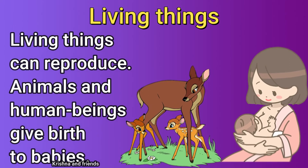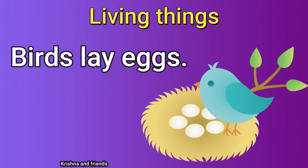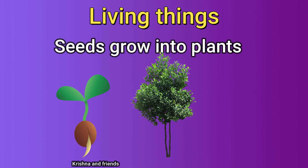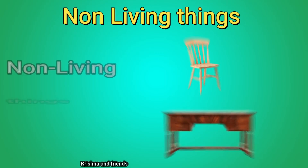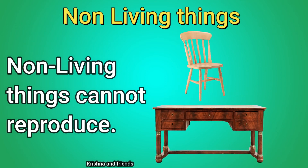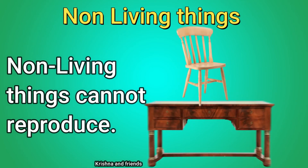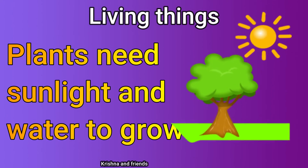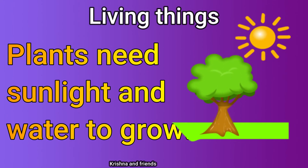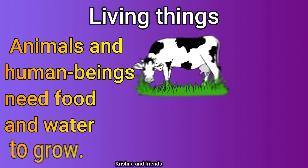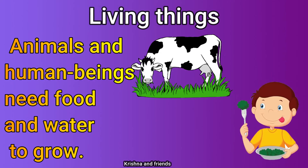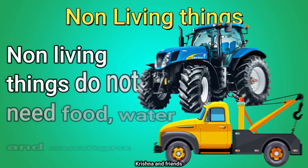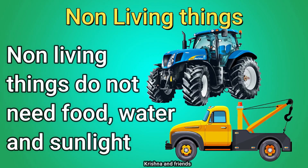Birds lay eggs and seeds grow into plants, while non-living things cannot reproduce. Plants need sunlight to grow, while animals and human beings need food and water. Non-living things do not need food, water, or sunlight.